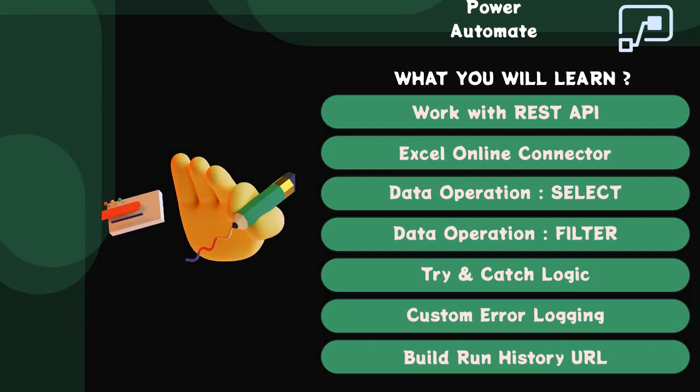Once that is done, we will look into try-and-catch logic — how to build try-catch logic within Power Automate, since it is not provided by default in the Power Automate ecosystem. After that, we will look into custom error logging, which is one of the most important features for Power Automate programs. Power Automate only holds 28 days of run history, and for audit purposes or to analyze root causes of failures, we must log errors into a database — in our case, a SharePoint list.